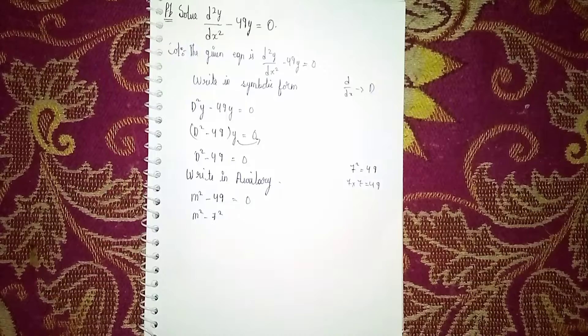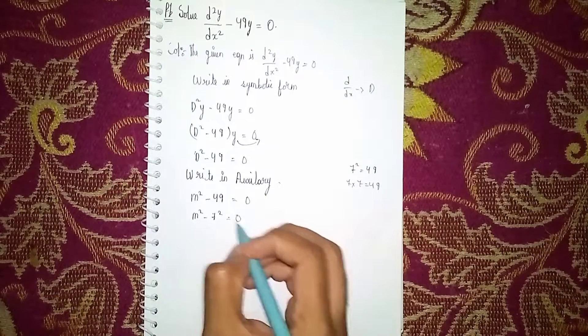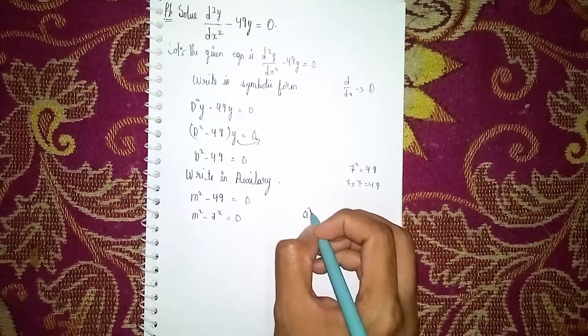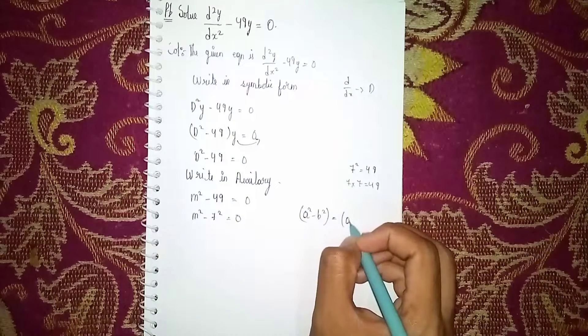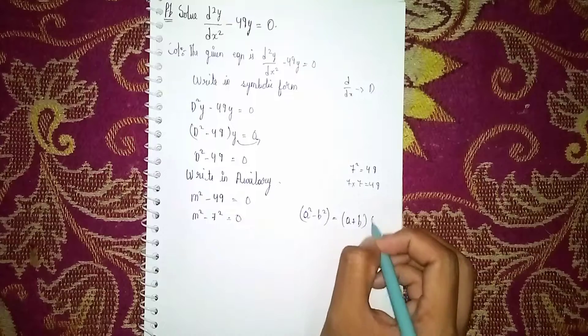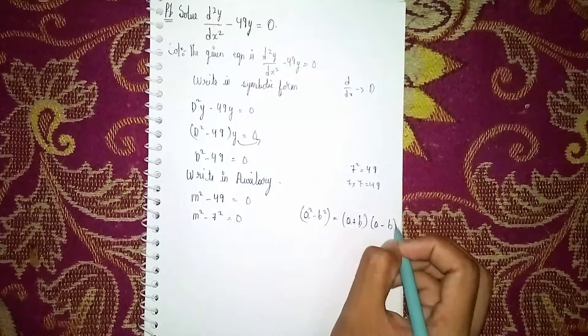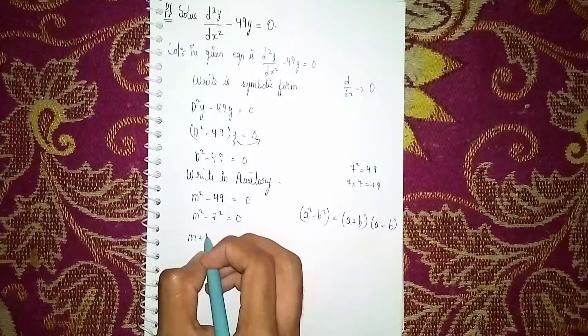Now you can see it is in the form of a² - b². The formula is a² - b² = (a + b)(a - b). So it becomes (m + 7)(m - 7).